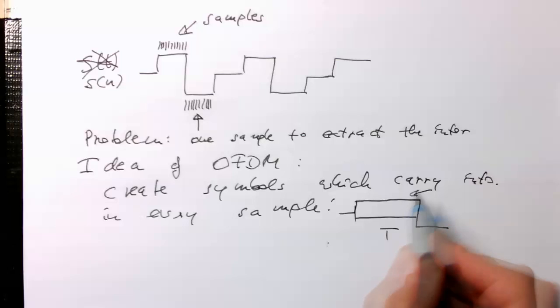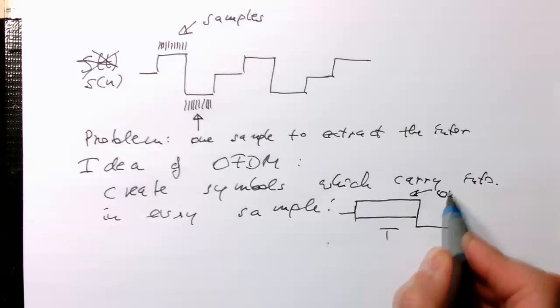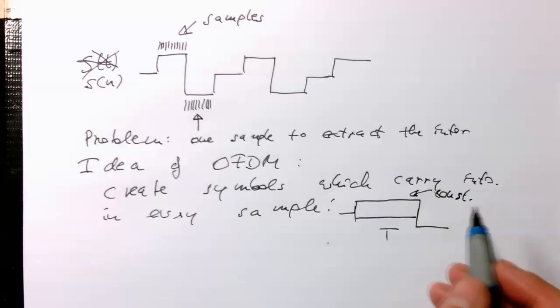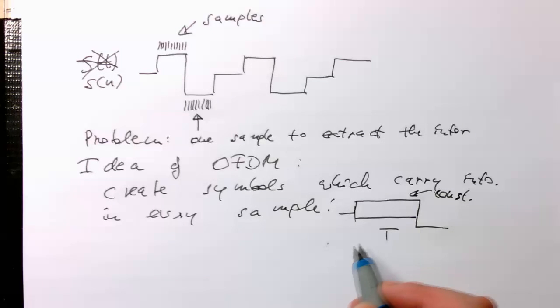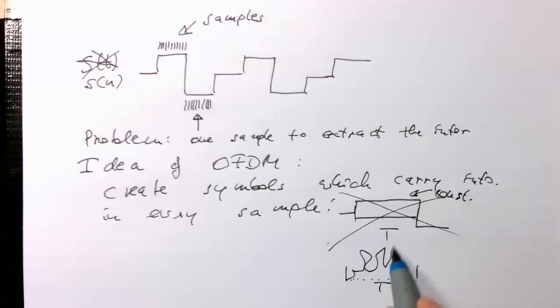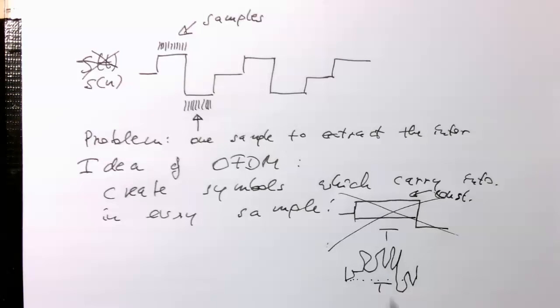So we abolish that. And what we do is during our symbol duration T, remember these are just all tiny samples here. So we are creating something really, really complex. And putting loads of information here where every sample carries information.